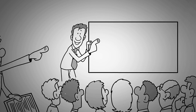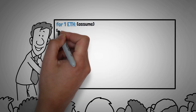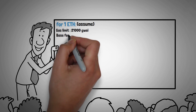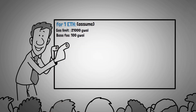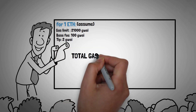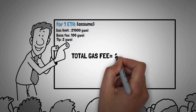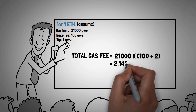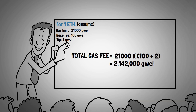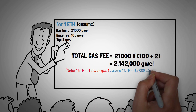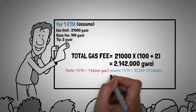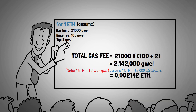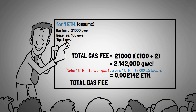For example, say you wanted to send a friend 1 ETH on the Ethereum network, the gas limit was 21,000 Gwei, and the base fee required was 100 Gwei. To help make this transaction successful, you add a tip of 2 Gwei. After making sure your limit is set for at least 21,000, you can request the transfer. Plugging that into the formula: 21,000 × (100 + 2) = 2,142,000 Gwei. If 1 ETH equals $2,000 USD, your total gas fee would be 0.002142 ETH, or about $4.28.